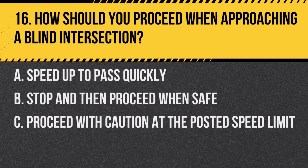Question 16: How should you proceed when approaching a blind intersection? A. Speed up to pass quickly. B. Stop and then proceed when safe. C. Proceed with caution at the posted speed limit. Answer: C. Proceed with caution at the posted speed limit. At a blind intersection, slow down, proceed with caution, and be ready to stop if necessary.